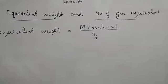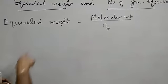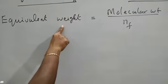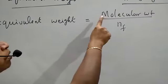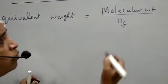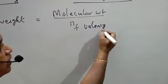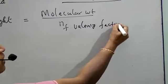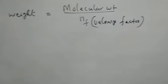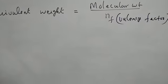The formula is: equivalent weight of any compound or any metal — this can be written for any element or any compound — is equal to molecular weight divided by N-factor. The N-factor can also be called the valency factor. So equivalent weight equals molecular weight divided by the valency factor.